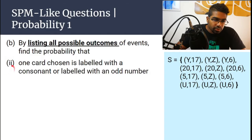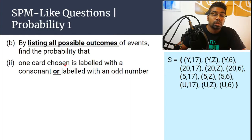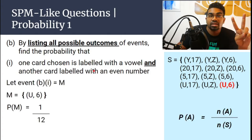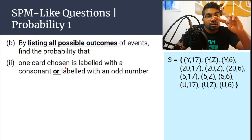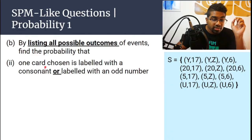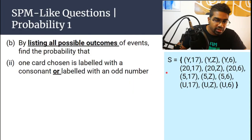Number 2: find the probability that one card chosen is labelled with a consonant OR labelled with an odd number. In this case we have OR. Just now it was AND — now it's OR. When it is AND, both conditions must be satisfied. But if it is OR, either condition must be satisfied and we can choose it.